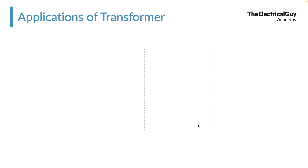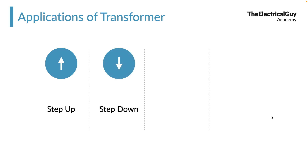The transformer helps us in stepping up voltages and stepping down voltages. We use transformers daily in our life — take the example of a mobile charger. A mobile charger is one type of transformer; the only difference is it also converts AC into DC. But initially it steps down the 230 volts to, let's say, 5, 10, or 15 volts, and then it is converted into DC. The initial function of stepping down is the transformer.